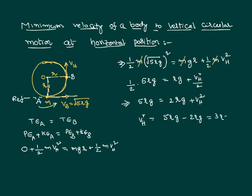Therefore, v_h² = 5Rg − 2Rg = 3Rg. So the velocity at the horizontal position is root(3Rg). This is the minimum value — it could be more than this, but the minimum is root(3Rg). This is the equation we wanted to derive.